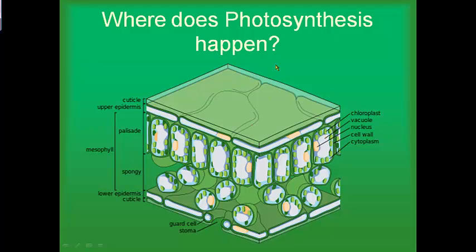The chlorophyll is what captures the energy from the sun. The sun shines down on the plant, through the skin, and the chloroplasts inside the palisade cells capture that light energy using the chlorophyll and store it so the plant can do photosynthesis. Chlorophyll is a green color — that's why leaves are green, because this greenish chemical makes the leaves look green.